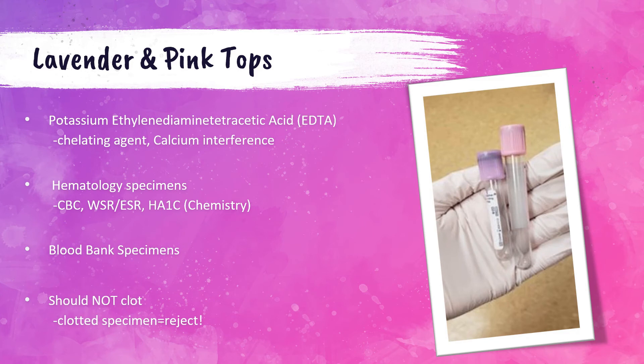The next tubes in the order of draw are the lavender and pink top tubes. These contain potassium EDTA, which is sprayed on the inside of the tubes. EDTA acts as a chelating agent — when it comes in contact with the blood being collected, it sucks up the calcium in that blood. Since calcium is part of the coagulation cascade and is needed for blood to form a clot, the EDTA prevents the blood in lavender and pink top tubes from clotting. The lavender top is used for hematology specimens such as complete blood counts (CBCs), sedimentation rates, and glycated hemoglobin (A1C).